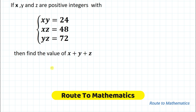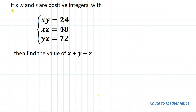Hello everyone, welcome to Root 2 Mathematics. In this video we're going to solve an interesting question. The given question is: if x, y, and z are positive integers with xy = 24, xz = 48, yz = 72, then find the value of x + y + z. We have three equations and we are asked to find the value of this expression.